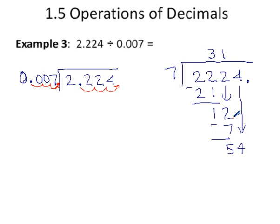7 into 54 goes 7 times. 7 times 7 is 49. 54 minus 49 is 5. Drop down another digit.